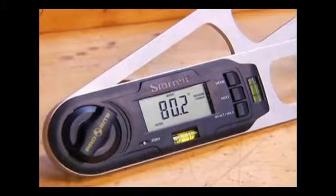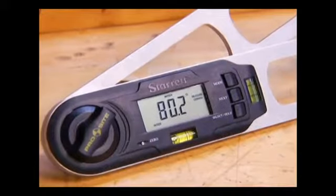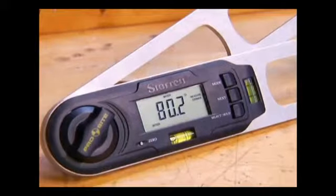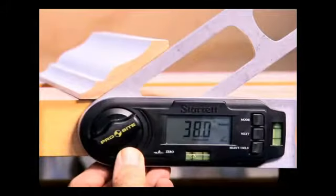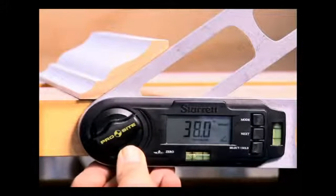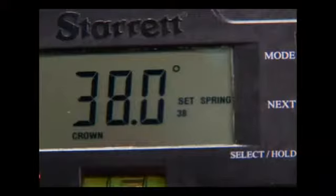With the introduction of this digital miter gauge from Sterrett Tools, this process is greatly simplified. To begin with, the spring angle can be read directly from the crown molding. The spring angle is then entered into the gauge's onboard microprocessor.